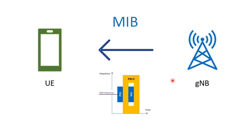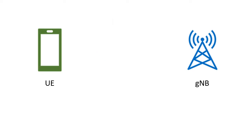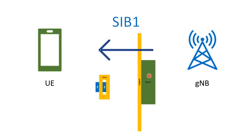If the cell is not barred for access, then it will go to the next step — it will read the SIB1 information. Upon successful read of MIB, it will also read the SIB1 message. The SIB1 detection, or CORESET0 detection, information is contained in this MIB. The PDSCH part of SIB1, and the information to detect that part, is included in CORESET0. SIB1 includes useful information like cell selection information and downlink channel resource information, including broadcast control and RACH resources.